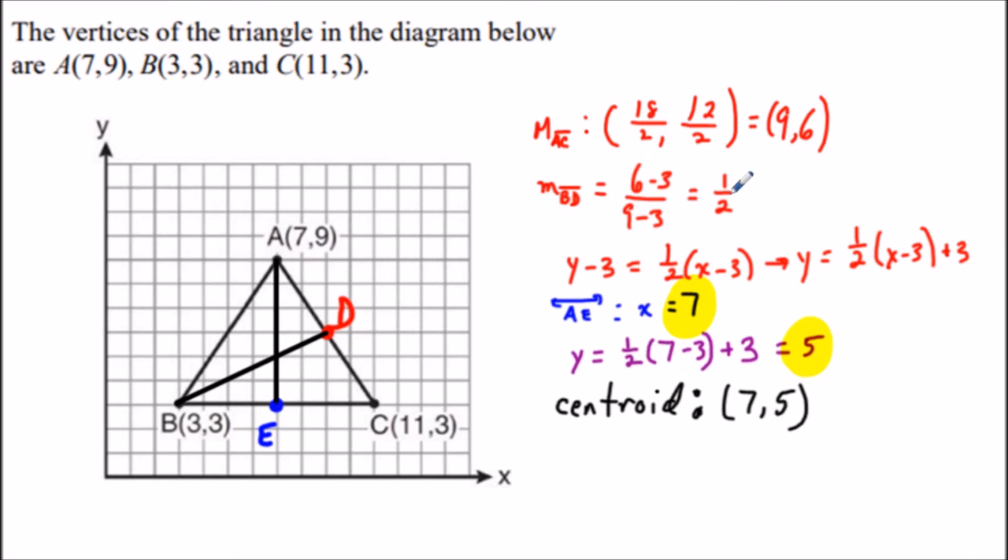We find the coordinates of D at (9,6), then find the slope between the points, which is 1/2, and use that to write the equation of the line.